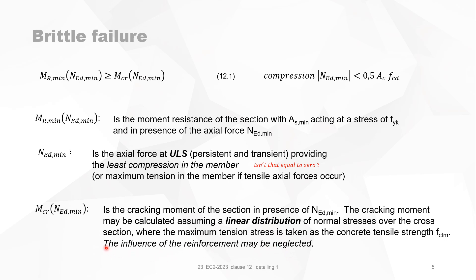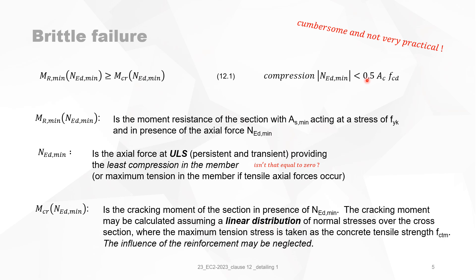It is very useful that the reinforcement contribution can be neglected, because otherwise the cracking moment M critical would also be a function of the minimum reinforcement, making it very difficult to use this formula since both sides of the equation would depend on AS min. Using formula 12.1 is very cumbersome and not very practical. I will first explain why we introduce a small upper limit for the compression force, and then try to give a closed formula for some cases.